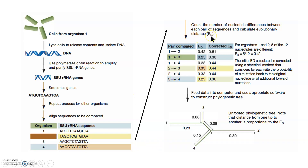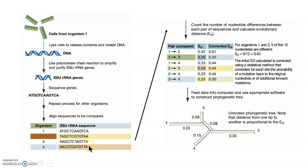To calculate the evolutionary distance — how divergent two sequences are — you take the number of different nucleotides (in this case, 3) and divide by the total number of nucleotides in the sequence (in this case, 12). So 3 out of 12 equals 0.25. For the purposes of this course, we'll work with this straightforward evolutionary distance (ED) value, so there's a 0.25 evolutionary distance between those two sequences.